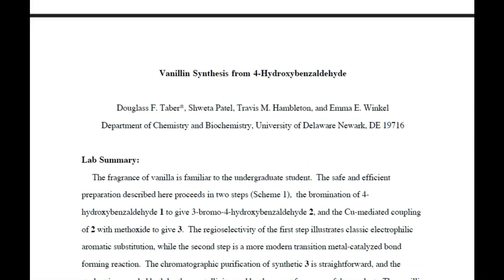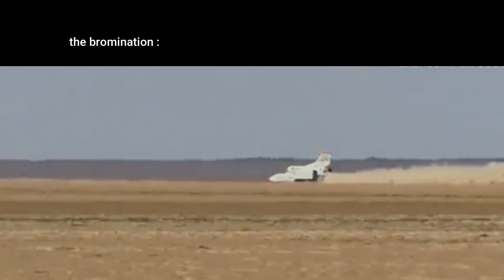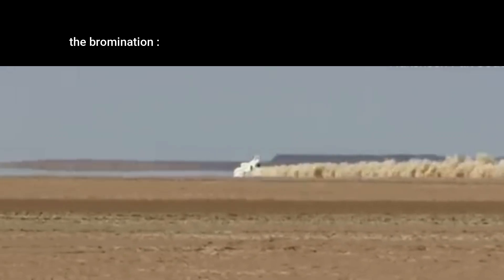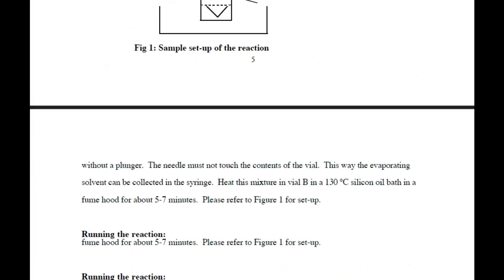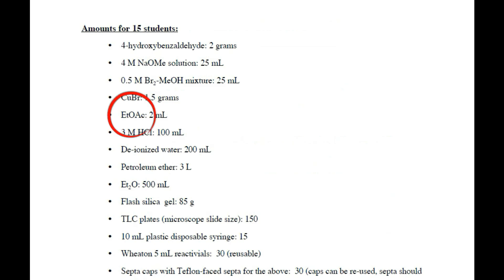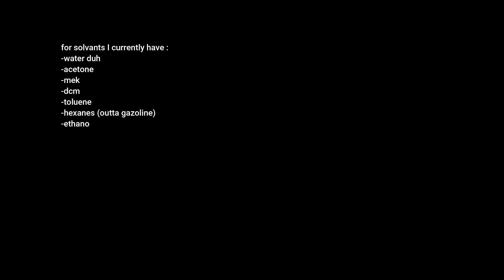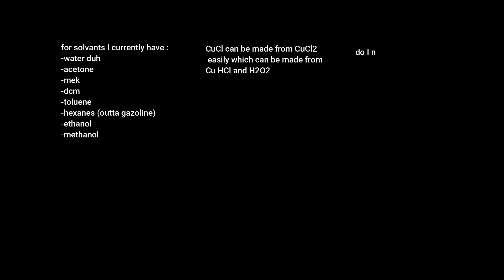The bromination is supposed to last about 30 seconds for some reason, and then we quickly go to the last step. The last step needs three chemicals that I don't have at the moment: sodium methoxide, which is the reagent; copper bromide as a catalyst; and ethyl acetate as a solvent. So my main questions are: can I use another solvent if possible? Can I use copper chloride instead, because it would be easier to make? And how do I make the sodium methoxide? I haven't researched those yet, but if you have some ideas, I'd be happy to hear them in the comments.